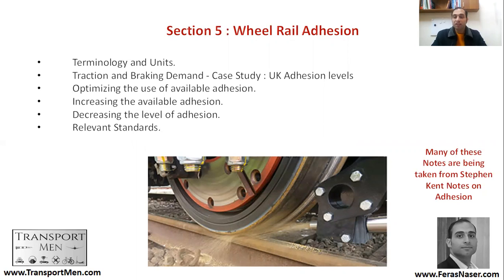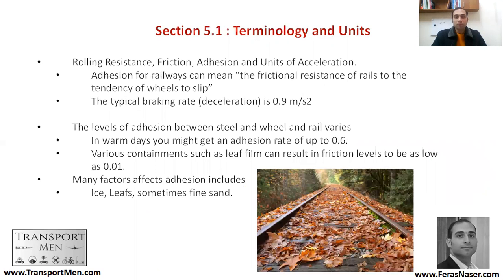It should be noted that many of these notes are taken from Stephen Kent's notes on adhesion, from a presentation in 2010. Terminology and units: rolling resistance is the resistance between the wheel and the rail; friction is the resistance between the material of the wheel and the material of the rail. Adhesion is very much similar to friction, and its units are acceleration — meters per second squared — because it impacts braking and traction.